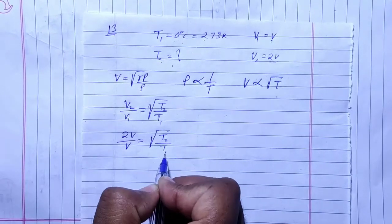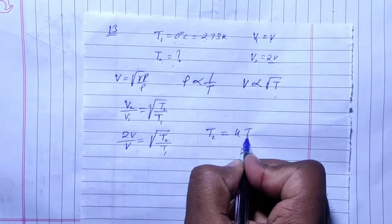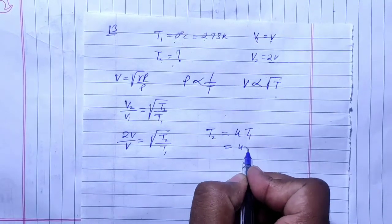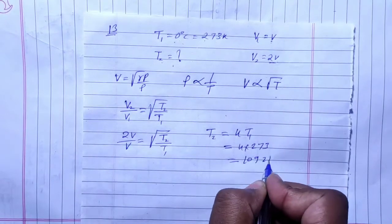T2 is equal to 4 times T1, and T1 is equal to 273. If you multiply, 4 times 273 is equal to 1092 Kelvin.